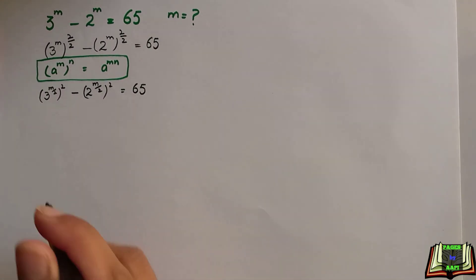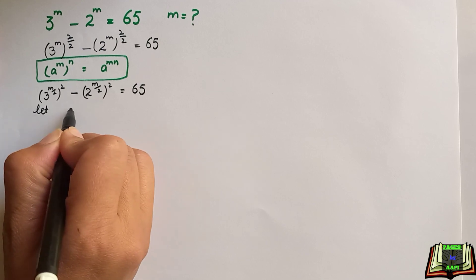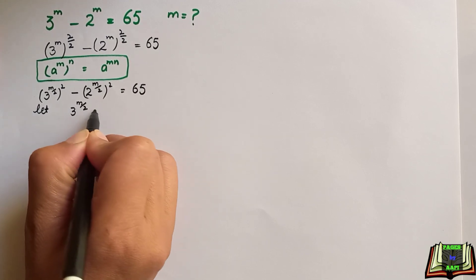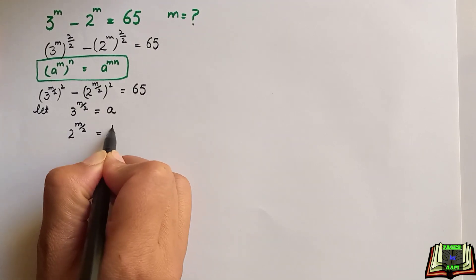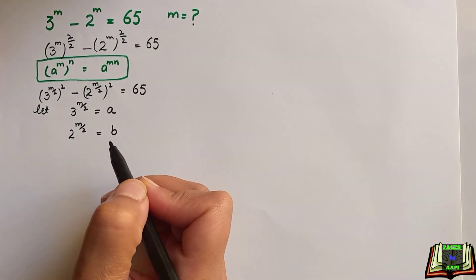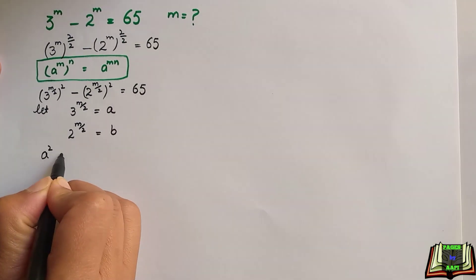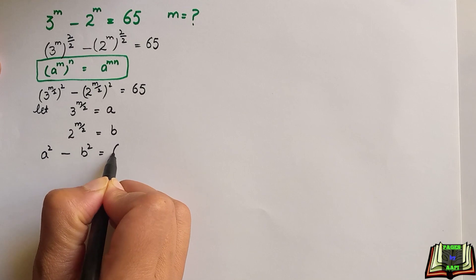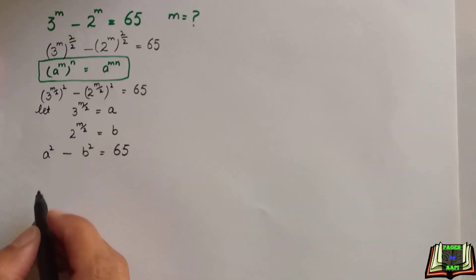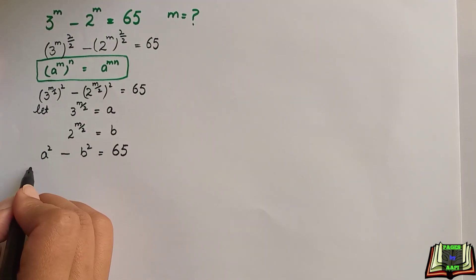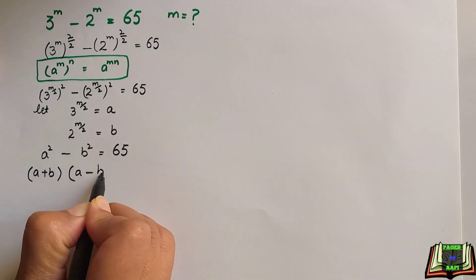For further simplification, we use substitution. Let 3 to the power m/2 equal a, and 2 to the power m/2 equal b. Then the equation becomes a squared minus b squared is equal to 65.